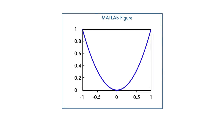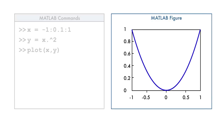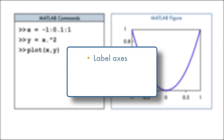To create a plot in MATLAB, such as the one shown, we have seen how we can use commands like these. After creating the plot, we may want to add additional information to the plot to make it more understandable. In particular, we may want to add labels to the axes, a title, or a legend.